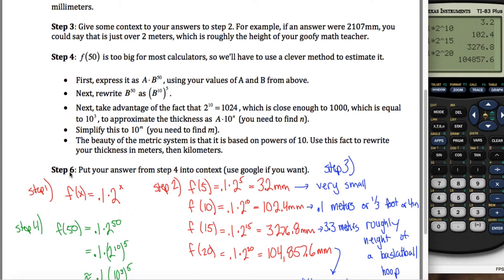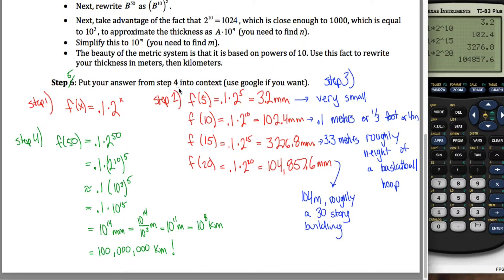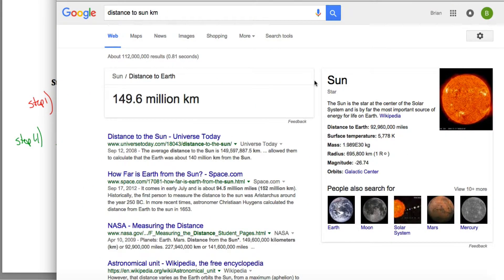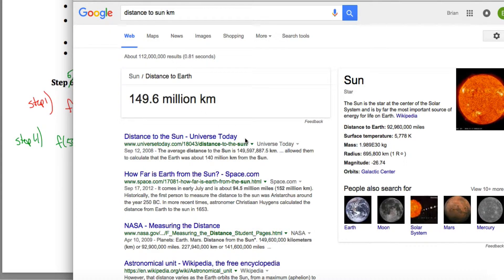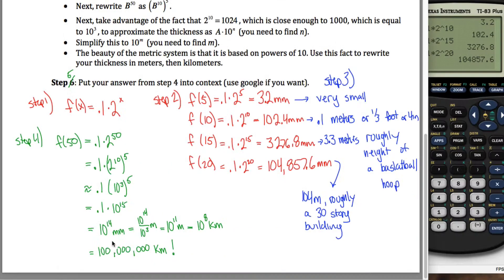Step 6, doesn't make a whole lot of sense, I guess that's step 5, it says to put that answer into context. To put that into context, I Google it because I don't know anything off the top of my head, and if everything on the internet is to be trusted, it says the distance from the sun to the earth is 150 million kilometers, roughly, which is crazy. This was 100 million kilometers, we're almost to the sun, almost two-thirds of the distance to the sun, which is a long way.